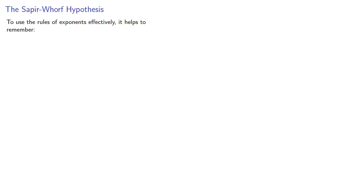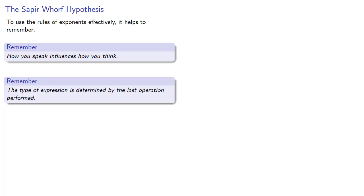To use the rules effectively, it helps to remember something known as the Sapir-Whorf hypothesis: how you speak influences how you think. If you read these mathematical expressions correctly, it will help you work with them. Part of reading mathematical expressions correctly is to identify the type of expression. The type of expression is determined by the last operation performed.